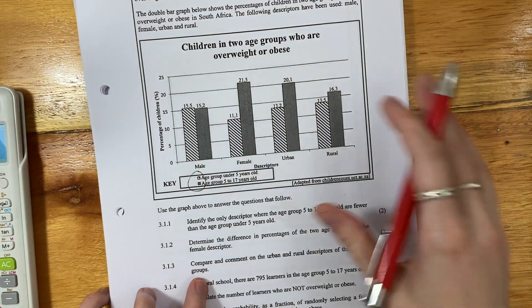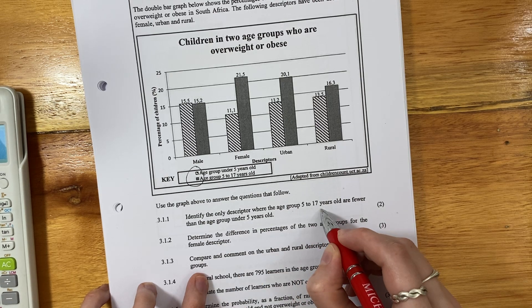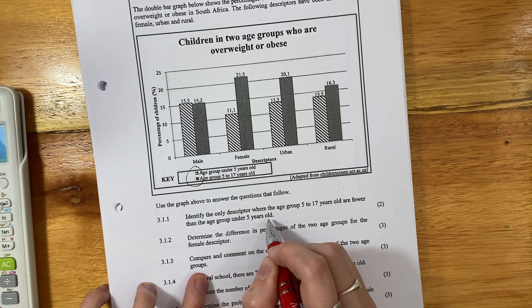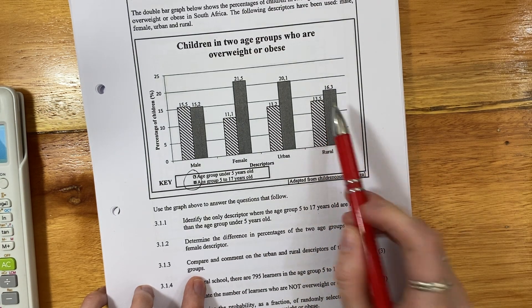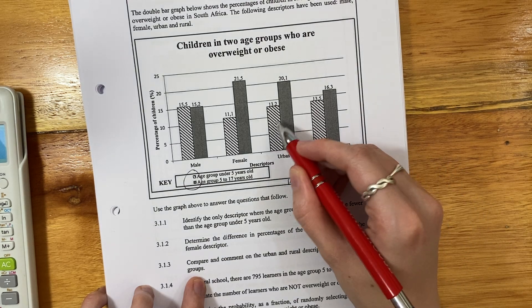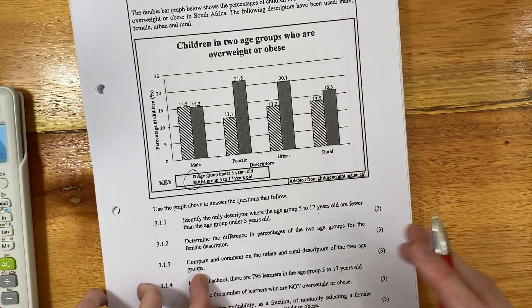So we're looking at this graph and it says identify the only descriptor where the age group 5 to 17 years old are fewer than the age group under 5 years old. So here we can see it's above, right? Because this is 5 to 17, that's below 5. Here it's above, here it's above. Here's the only one where it's below. So it's male.